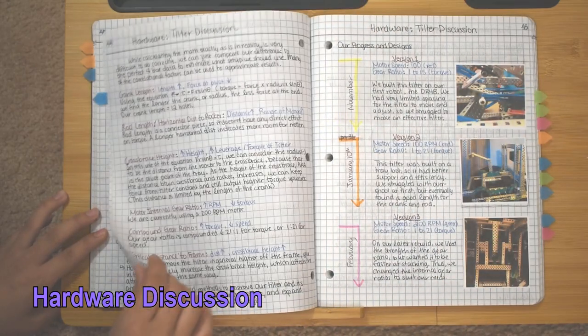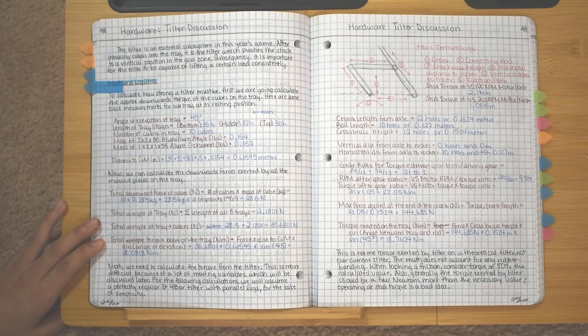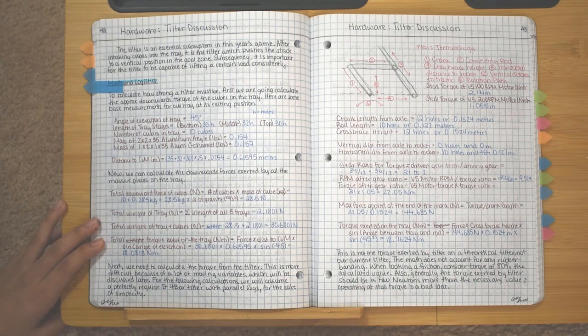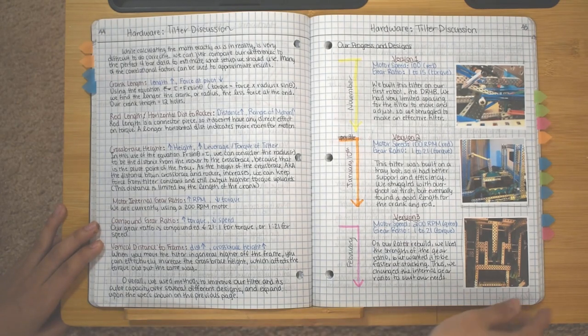In this entry, we look to optimize our tilter, justifying our building choices by researching and calculating the math behind the subsystem as well as documenting past experimentation and references. These pages are not a part of the daily journaling in order for them to be found and reviewed quickly in one concise entry.